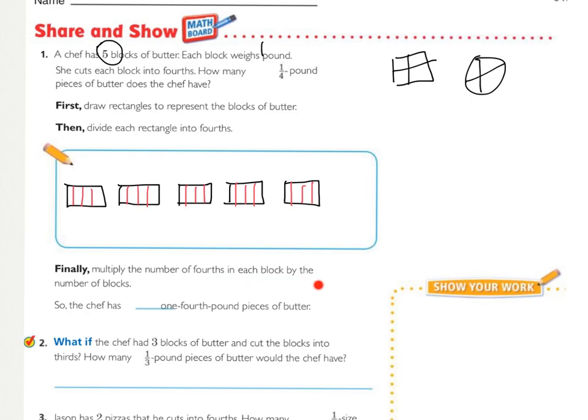And then finally, multiply the number of fourths in each block by the number of blocks. So how many are in each block? There are four in each block, and how many blocks are there? There are five. So how many actual one-fourth pieces are there? There are 20. And then right here I just added in the division problem so that we could see that these were all equal.